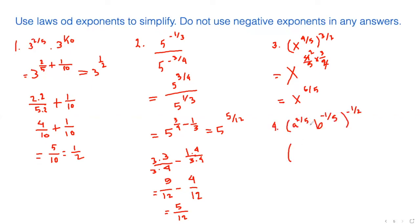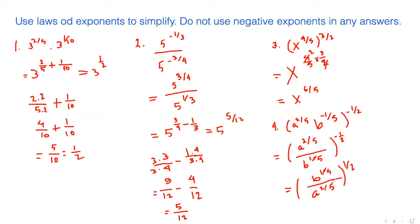Here we have a to the power 2 over 5, b to the power negative 1 fifth, and the whole thing raised to the power negative one half. Starting from inside: we write a to the power 2 fifths on top and move b with a positive exponent below. Then we flip the entire expression, switching the sign of the one half. On top we get b to the power 1 over 10, and below, the square and square root cancel leaving a to the power 1 over 5.